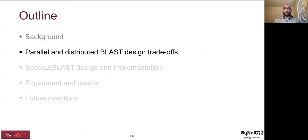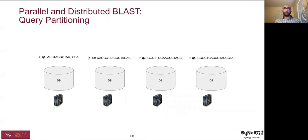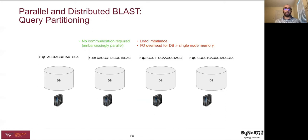The parallel and distributed BLAST design trade-offs — the first question is how to parallelize. One approach is partitioning the query file across compute nodes and replicating the database to every node. This approach has the advantage of being embarrassingly parallel, since computations of every query are independent and no communication is needed between compute nodes. However, it causes load imbalance because query sequences are of unequal length. More importantly, query partitioning suffers from significant IO overhead for databases that do not fit in memory, which makes it not scale with growing database sizes.